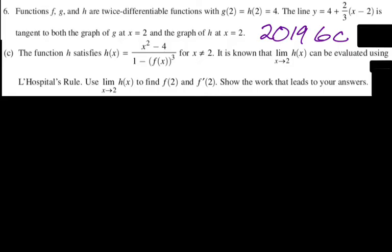Functions F, G, and H are twice differentiable with G(2) = H(2) = 4. So they're differentiable, which means they're continuous, which means their limits equal the values of their functions. The line y = 4 + (2/3)(x − 2) is tangent to both graphs, so G'(2) = H'(2) = 2/3. The function H satisfies H(x) = (x² − 4)/(1 − [F(x)]³). It's known that the limit as x approaches 2 of H(x) can be evaluated using L'Hopital's rule. We need to use that limit to find F(2) and F'(2).